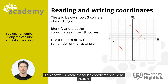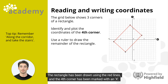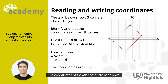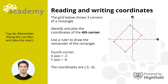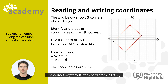We can then make sure the fourth point is plotted the correct distance. This shows us where the fourth coordinate should be plotted. The rectangle has been drawn using the red lines, and the fourth corner has been marked with an x. The coordinates of the fourth corner are: x-axis minus 3, y-axis minus 6. The correct way to write the coordinates is (minus 3, minus 6).